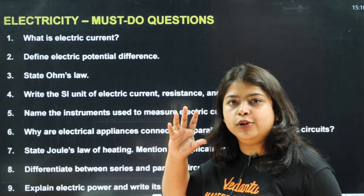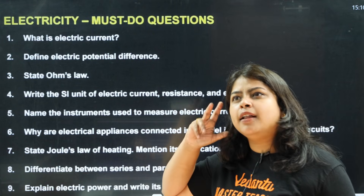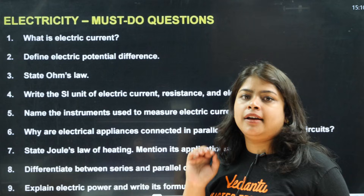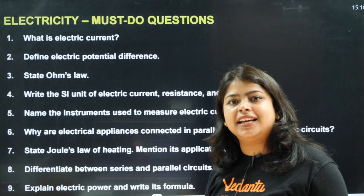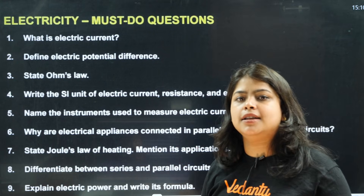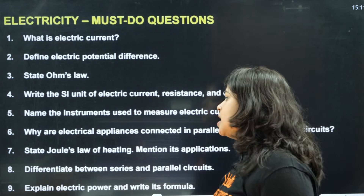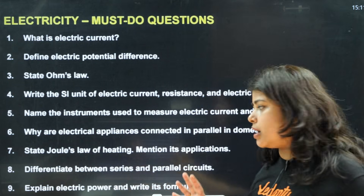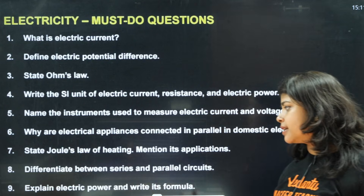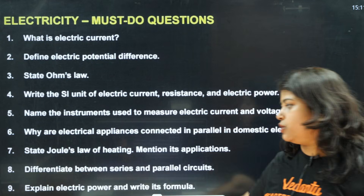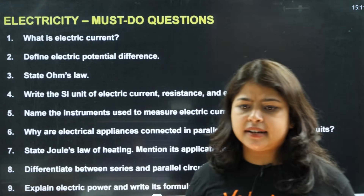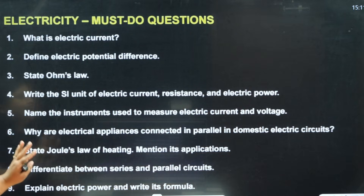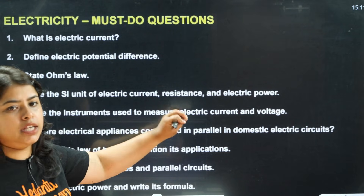Students get confused about whether parallel or series is used in domestic circuits. Application-based questions are being asked more these days, so you need to read and understand them carefully. Next: State Joule's law of heating and mention its applications — this is a short two-mark question. Also: Explain the difference between series and parallel circuits. Explain electrical power and write its formula — this has repeated many times. Please practice these electricity questions without missing any.